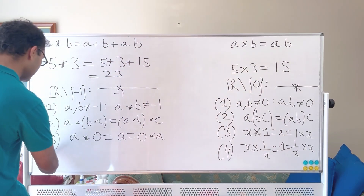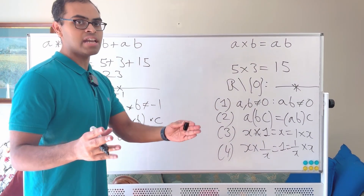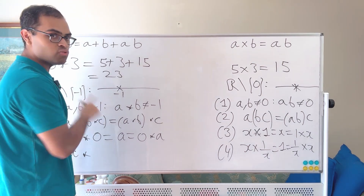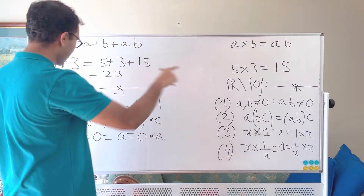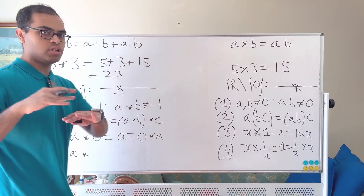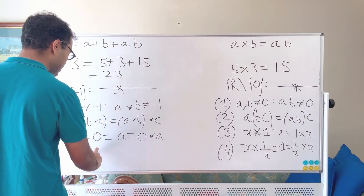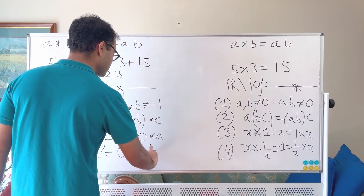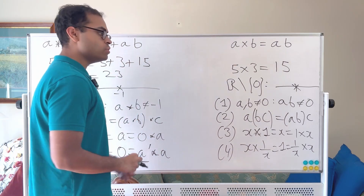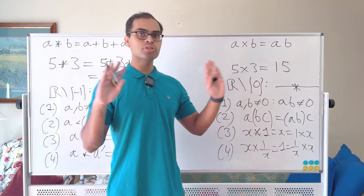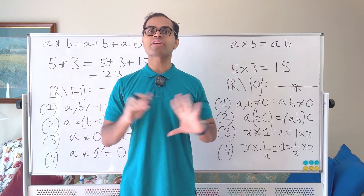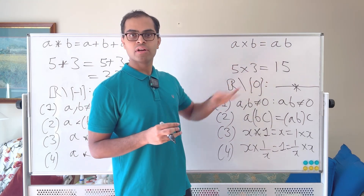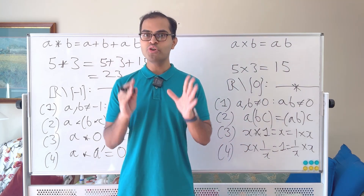For the ★ operation, there is also an inverse — and it's something quite wild. For any a not equal to −1, there exists an element a′ such that a ★ a′ = 0 = a′ ★ a. The number −1 doesn't have an inverse, just as 0 doesn't have an inverse under multiplication. Because both structures satisfy all four axioms — closure, associativity, identity, and inverses — they are both called groups. What I'm going to show you is that these groups are actually the same thing: isomorphic groups.